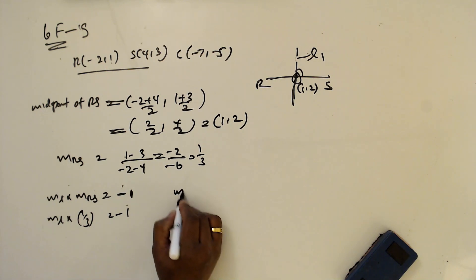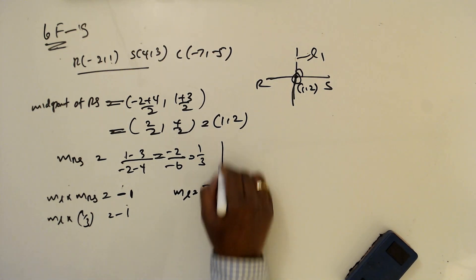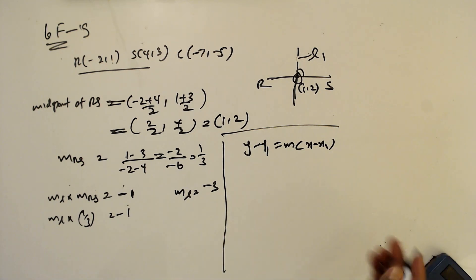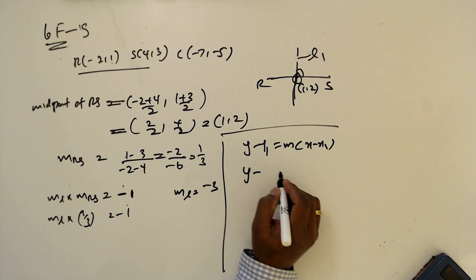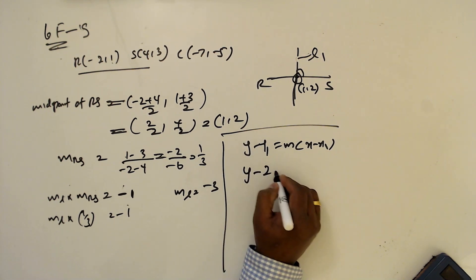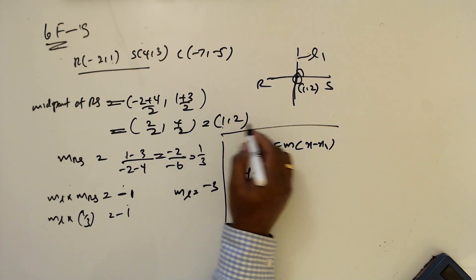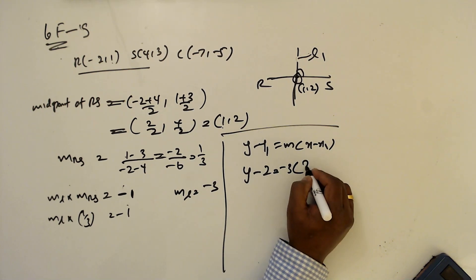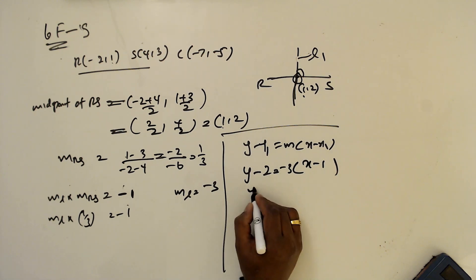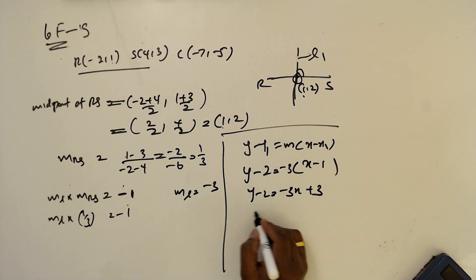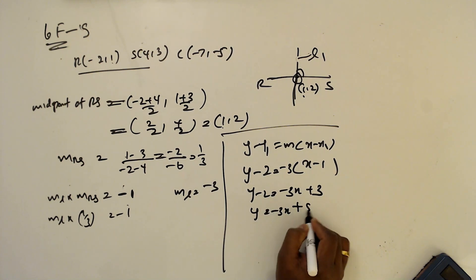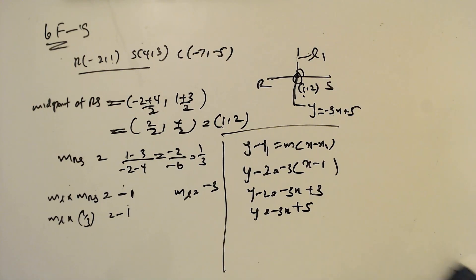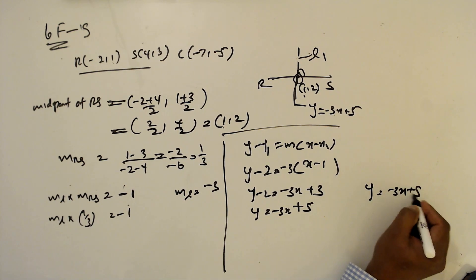So m equals minus 3. Using y minus y1 equals m times x minus x1, with point 1, 2: y minus 2 equals minus 3 times x minus 1. This gives y minus 2 equals minus 3x plus 3, so y equals minus 3x plus 5. This is the perpendicular bisector equation of RS: y equals minus 3x plus 5.